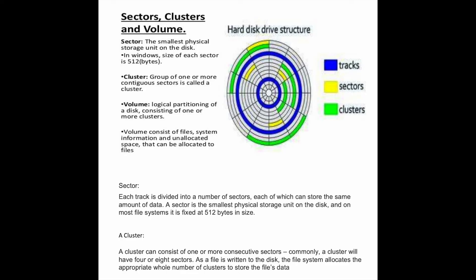Each track is divided into a number of sectors, each of which can store the same amount of data. A sector is the smallest physical storage unit on the disk, and on most filesystems it is fixed at 512 bytes in size.